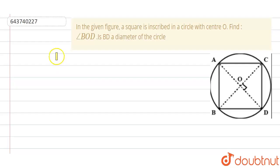Hello friends, today's question is: in the given figure, a square is inscribed in a circle with center O. Find angle BOD if BD is the diameter of the circle.